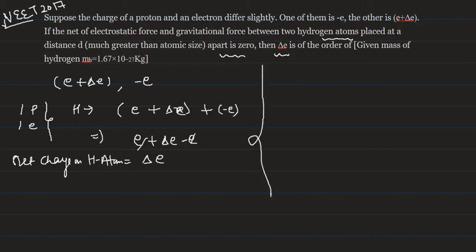So the electrostatic force is Fe = 1/(4πε₀) × (Δe)(Δe)/d². So this is the equation for electrostatic force between two hydrogen atoms.